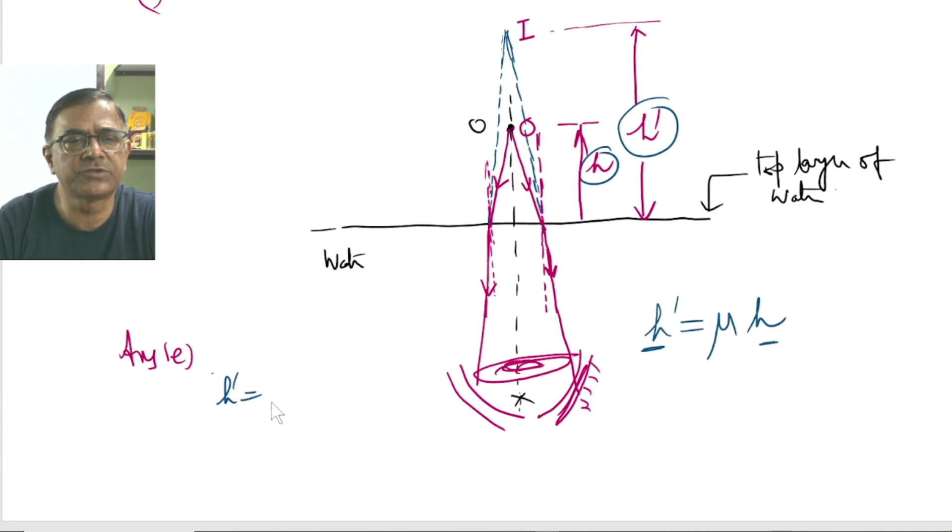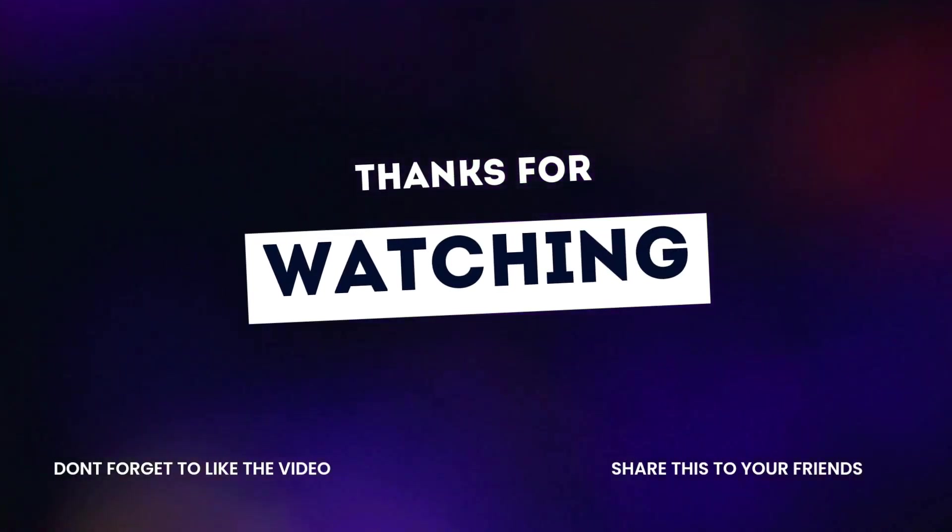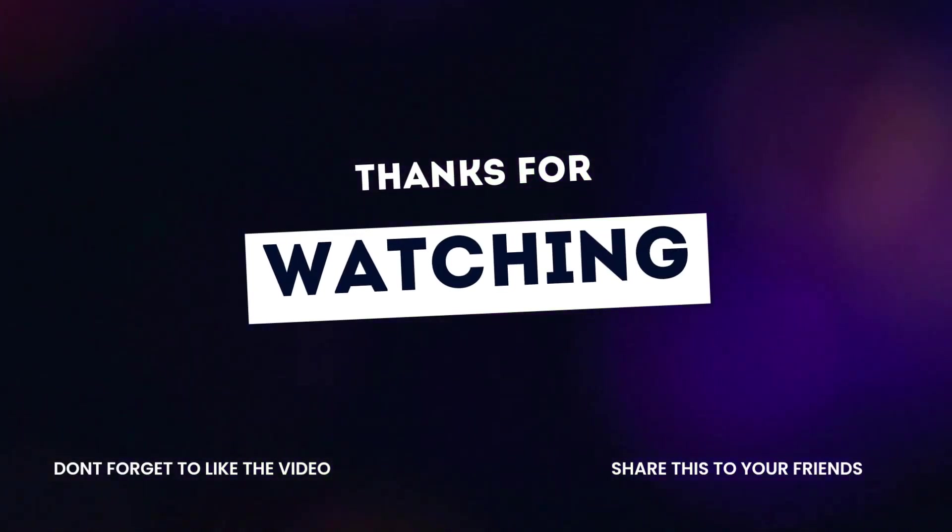h dash is equal to mu times h. This is 1.3 multiplied by 1.5. And the product of the two is 1.95 meters. So this should be the apparent height of the coin. All right. Thank you.